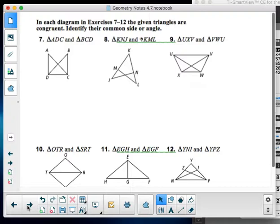Now, in each diagram here in exercise 7 through 12, the given triangles are congruent. Identify their common side or angle. So here, you'll be doing exactly what you did in one through six, except you'll be identifying the common side or angle. And you'll do that from 7 through 12.